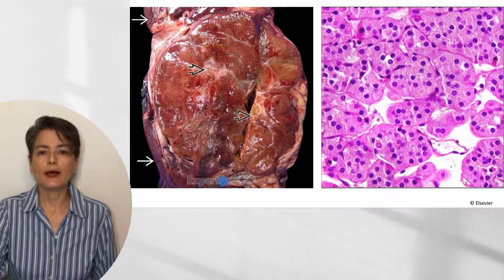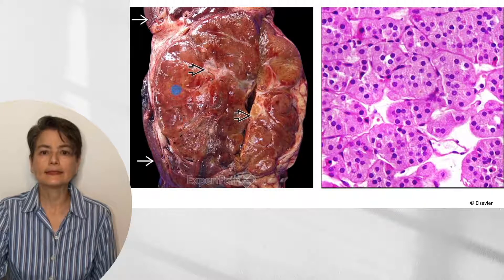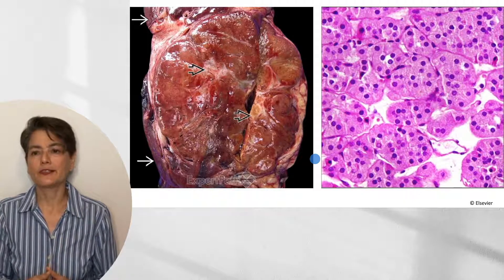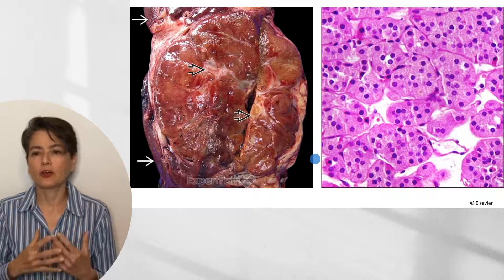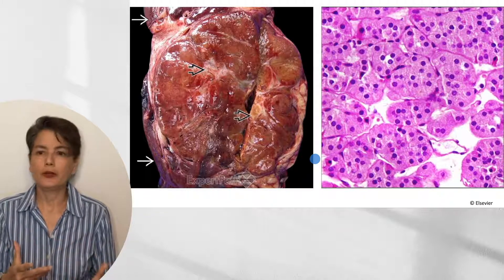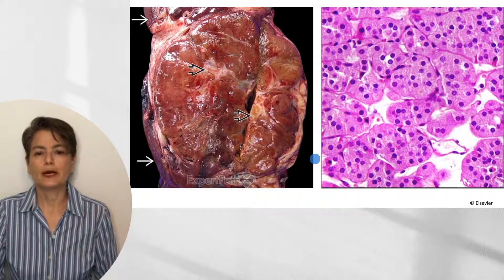Here are classic images of an oncocytoma. You can see a single large, well-circumscribed mass with residual normal kidney indicated by white arrows, and a fibrous central scar marked by black arrows, with that tan mahogany brown appearance. Histologically, we see abundant brightly eosinophilic granular cytoplasm. The nuclei are round, with no perinuclear halos, mitotic figures, necrosis, or pleomorphism — just a beautiful benign tumor.